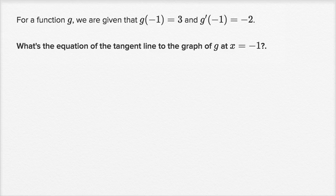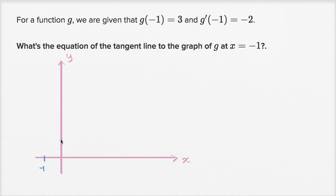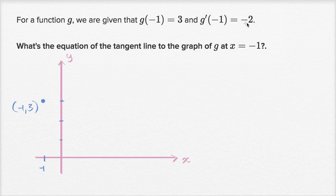I think it will be helpful to graph this. So we have our y-axis and our x-axis. We are given that g of negative one is equal to three, so the point negative one comma three is on our function — that's negative one on the x-axis and three on the y-axis, right over there. We also know that g prime of negative one is equal to negative two, so the slope of the tangent line right at that point is going to be negative two. That's the slope of the tangent line when x is equal to negative one.